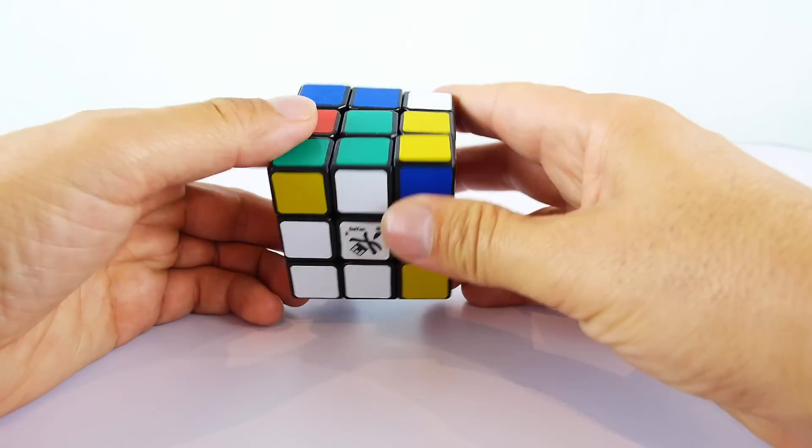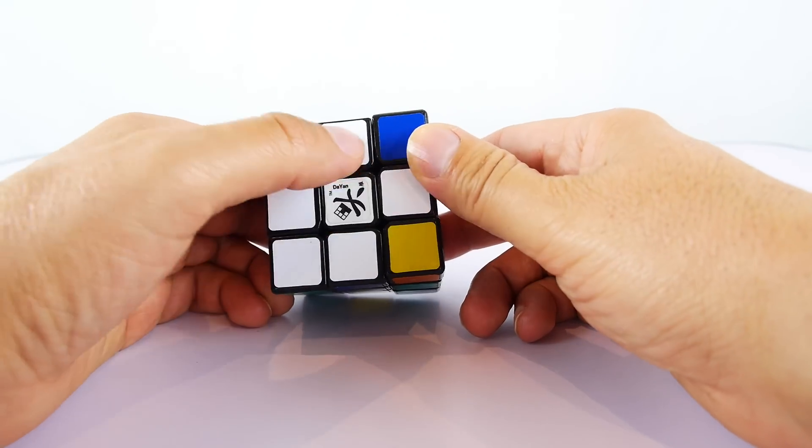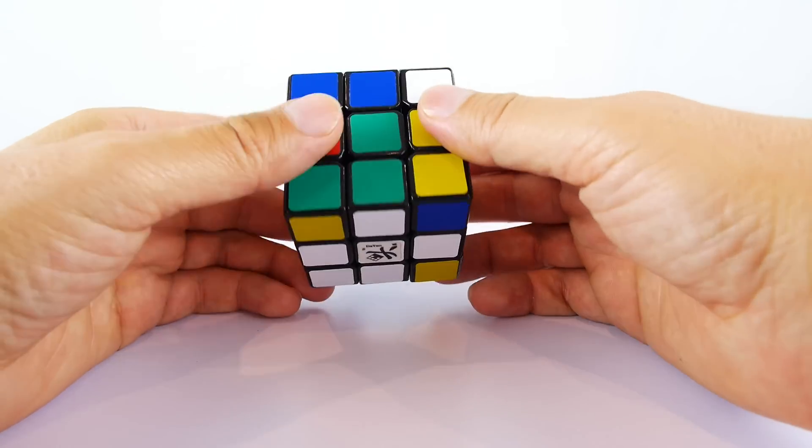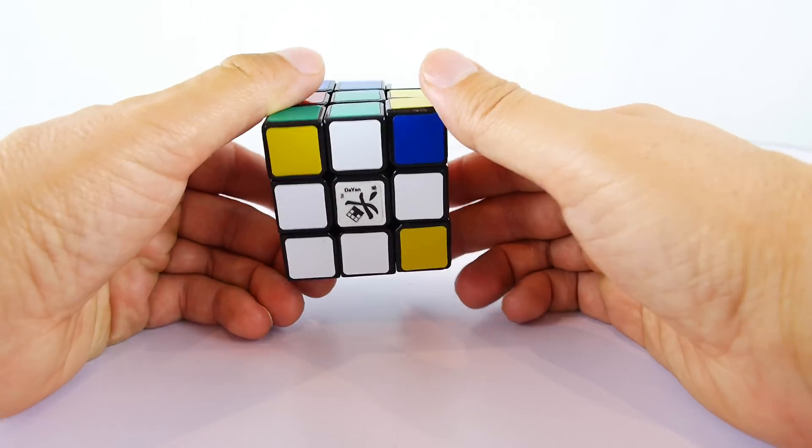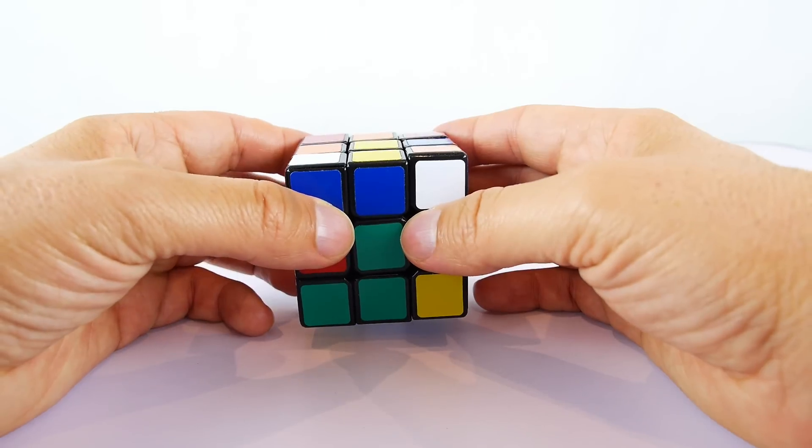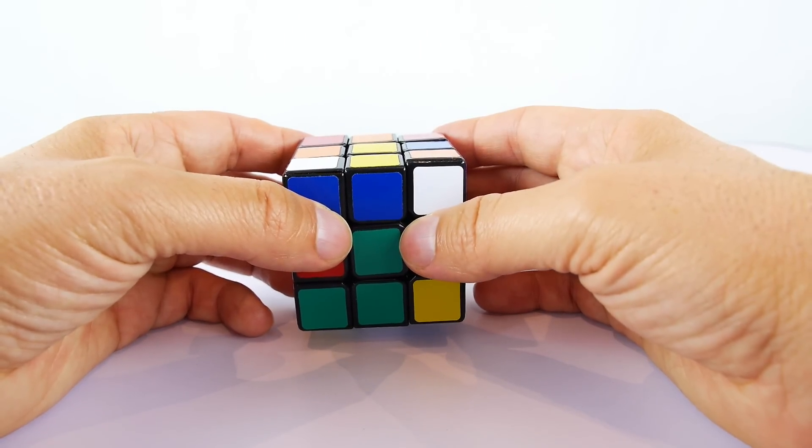And that's it. What we've essentially done is created a white cross down the bottom, but we'll go to the next step. Once you get comfortable with step one and two, move on to step three.